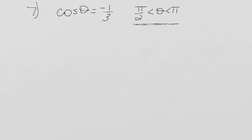This tells us that pi over 2 is less than theta and theta is less than pi. It tells us that we are working in quadrant 2. That's going to help us determine that sine is positive, cosine is negative, tangent is negative.